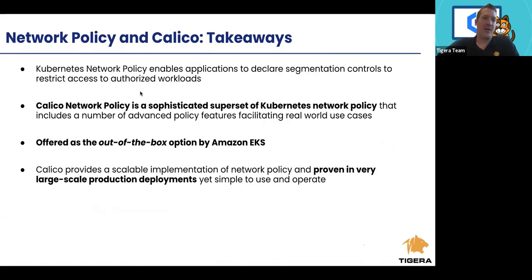So a couple of key takeaways here. The means of doing security on the network and segmenting your cluster is called Kubernetes network policy. It's a fundamental requirement typically to run in production in a safe manner. Calico network policy, Calico the engine will implement network policy for you if you want to use standard Kubernetes network policy, but it also is a superset of Kubernetes network policy. It'll give you a number of advanced policy features that can help out.